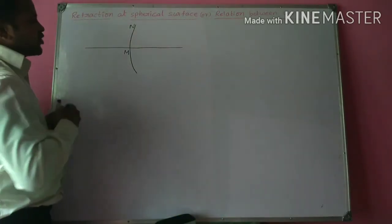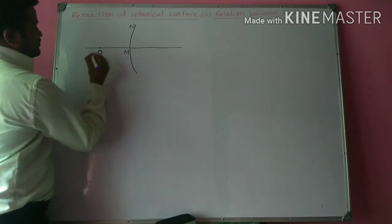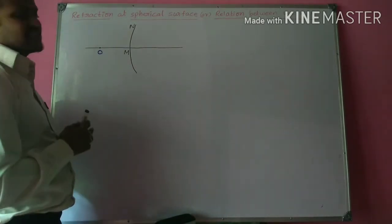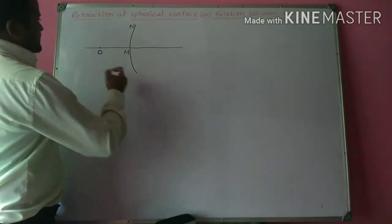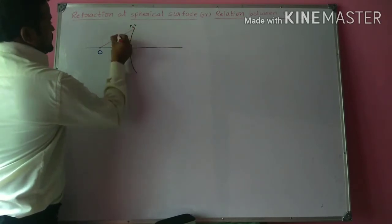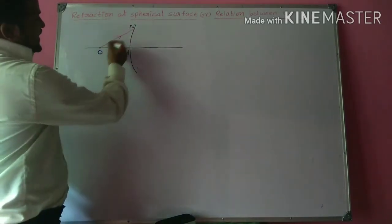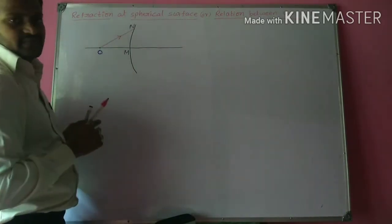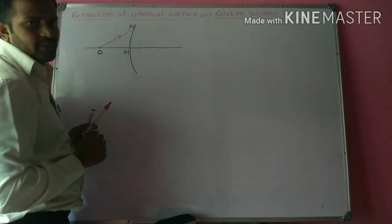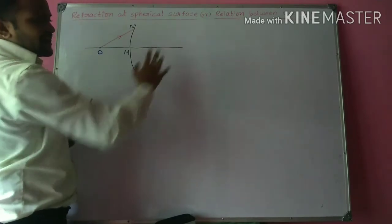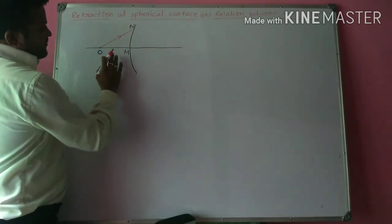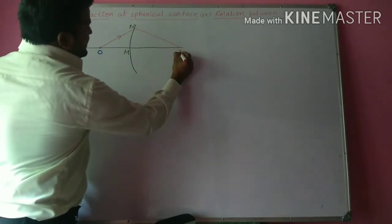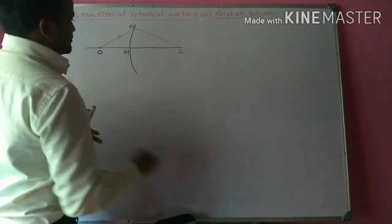Let us consider an object on the principal axis. This is the object O. To obtain the image of this object, two light rays can be used. A light ray from this object is incident on the spherical surface, and whenever this light ray is incident on the spherical surface, it undergoes refraction. Due to refraction, it changes its path when it travels from one medium to another medium. The refractive index of this medium, let us say, is N. Finally, at point I, it forms the image. I is the image. One light ray travels along the principal axis. At point I, the image is formed.